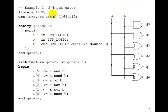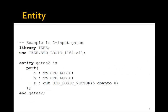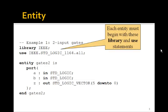This is the entire VHDL program that we'll use, so let's take a look at it in more detail. The VHDL program is made up of an entity and an architecture. Each entity must begin with this library statement, library IEEE, and this use statement. These two dashes is a comment in VHDL, so example 1, 2 input gates is just a comment.